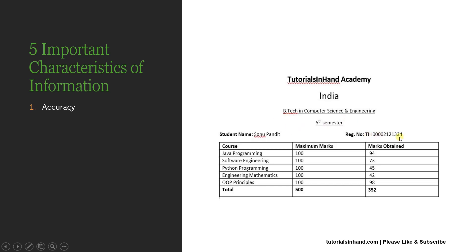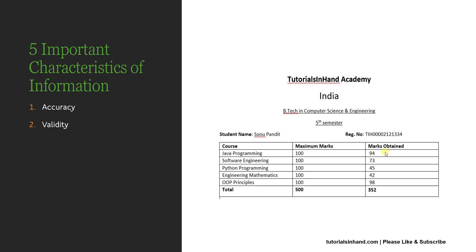If you see this mark sheet of a student — this is for the fifth semester, having this registration number — you can see this data is accurate. The decision can be made that yes, I need to improve my mathematics and Python programming also needs a lot of improvement. Similarly, the candidate can be proud that they are well acquainted with OOP principles and good in Java programming. This is how decisions can be made with accurate data.